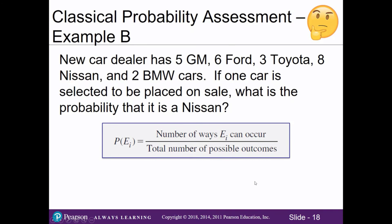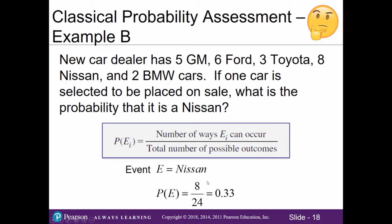Example B from the worksheet: a new car dealer has five GM, six Ford, three Toyota, eight Nissan, and two BMW cars. If one car is selected to be placed on sale, what's the probability it's a Nissan? Assuming classical probability, all cars have equal chance. We take 8 Nissans divided by the total of 24 cars, giving a probability of 0.33.